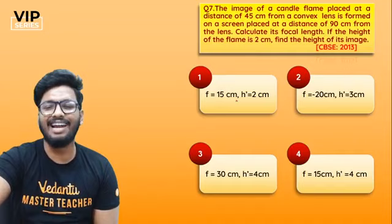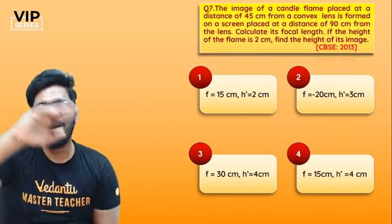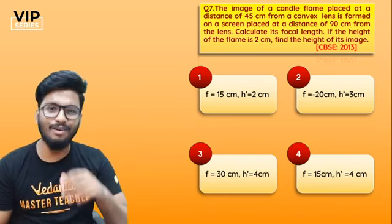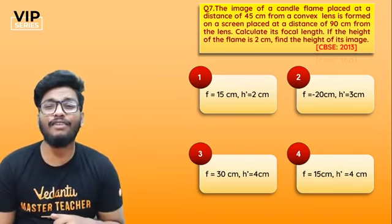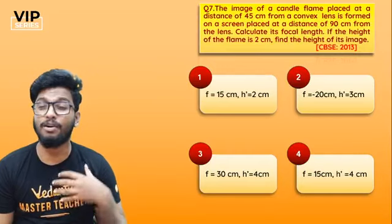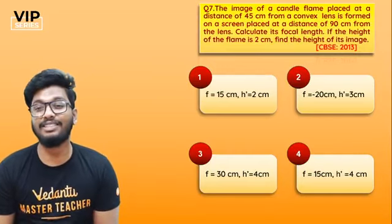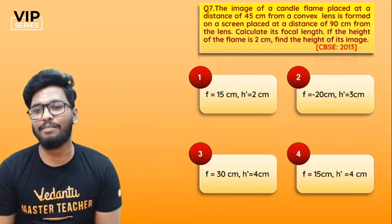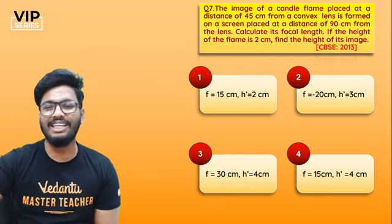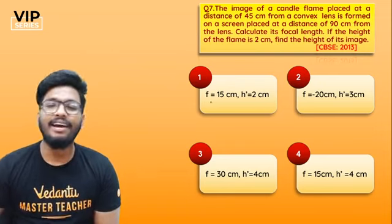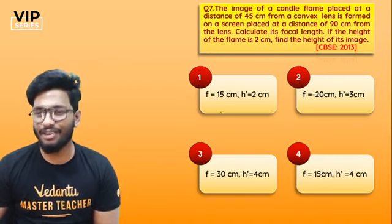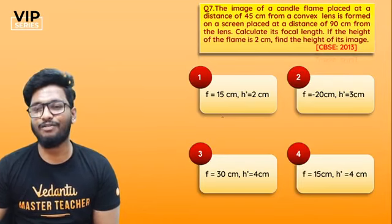Alright, let's get back to the questions. Moving on to the seventh question: the image of a candle flame placed at a distance of 45 cm from a convex lens is formed on a screen placed at a distance of 90 cm from the lens. Calculate the focal length. If the height of the flame is 2 cm, find the height of the image. Options: f = 30 cm, H' = 4 cm.